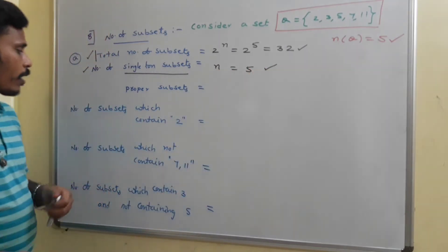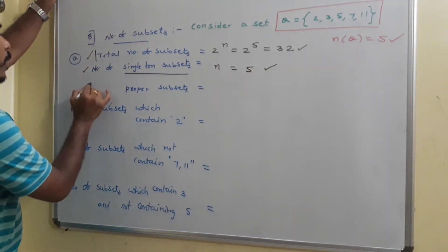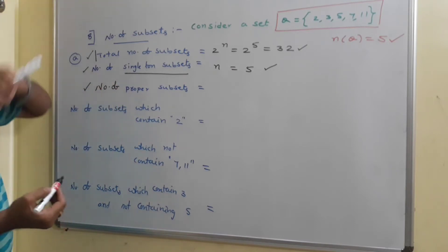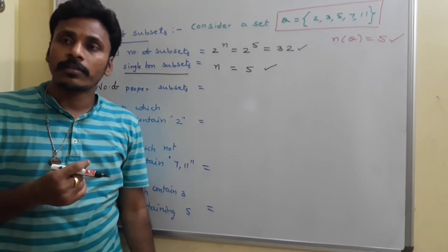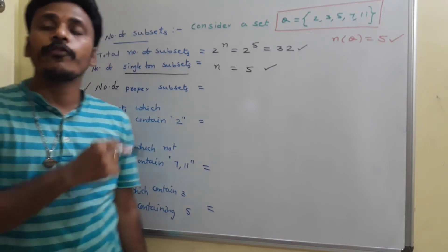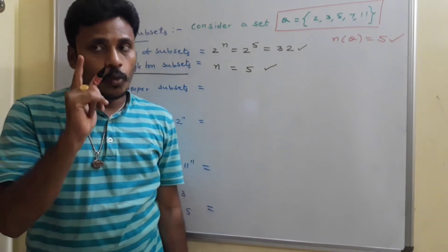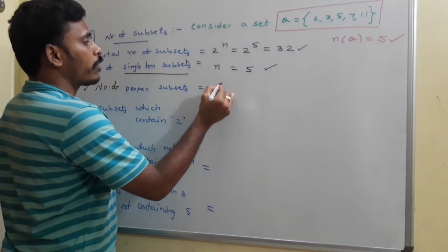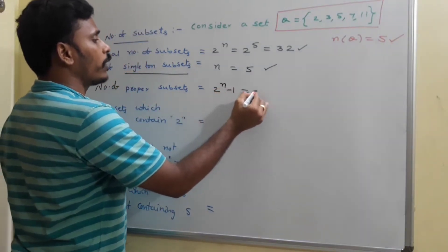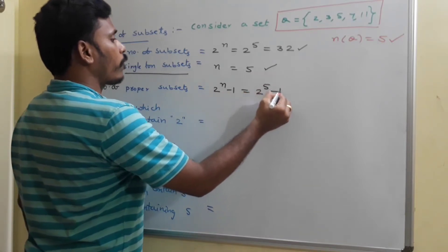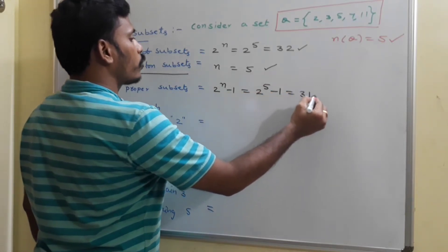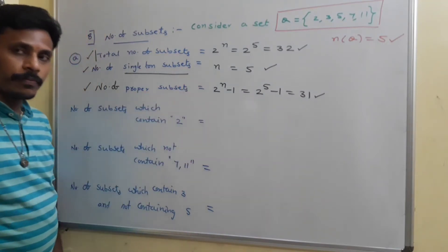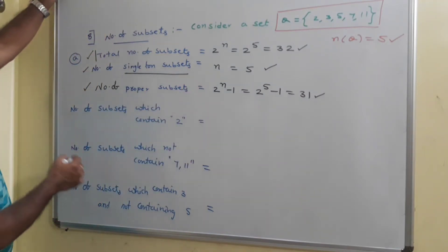The next question is the number of proper subsets. The number of proper subsets is obtained by eliminating the one improper subset from the total. So the formula is 2 power n minus 1. Writing 2 power 5 minus 1 equals 31. These are the number of proper subsets.